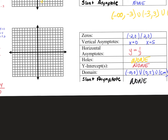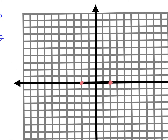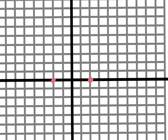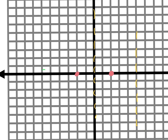What are we going to plot first? Our zeros: at negative 2 comma 0 and positive 2 comma 0. No y-intercept. Vertical asymptotes at x equals 0 and x equals 5. Horizontal asymptote at y equals one third — just above zero.